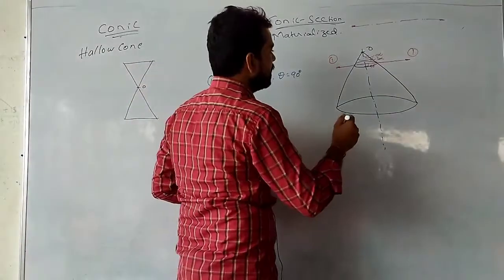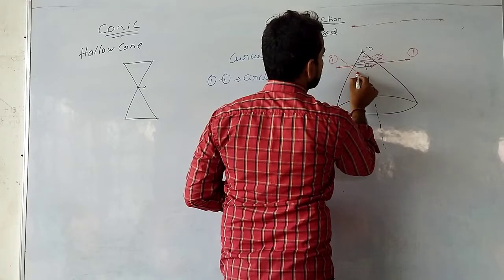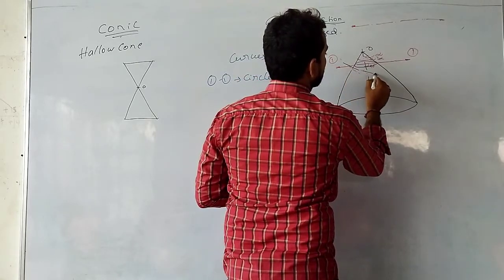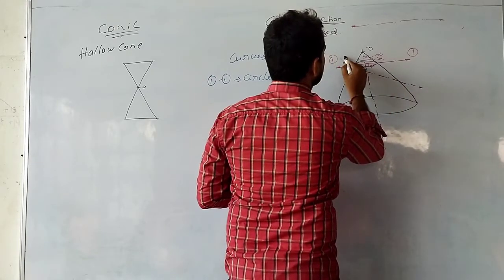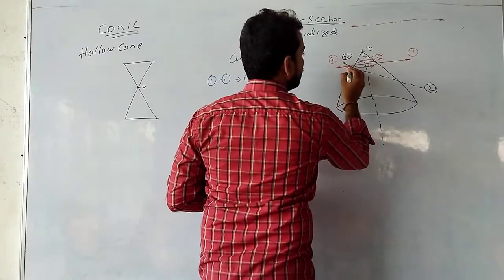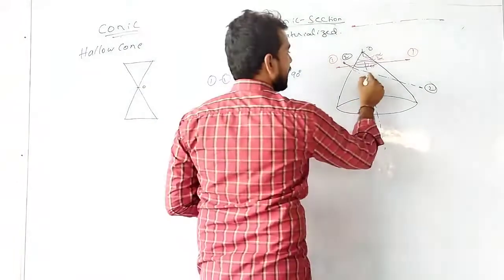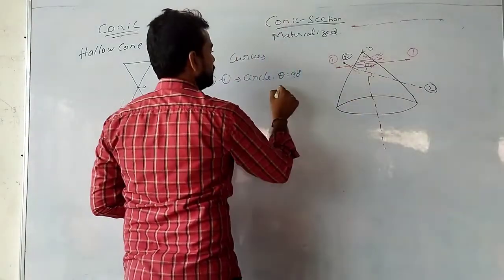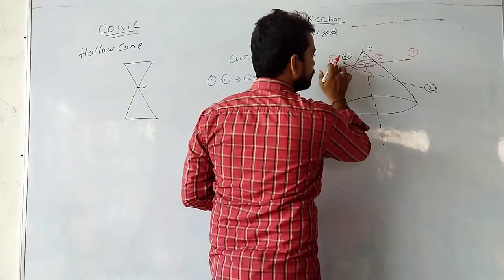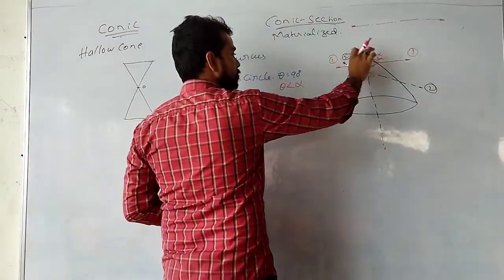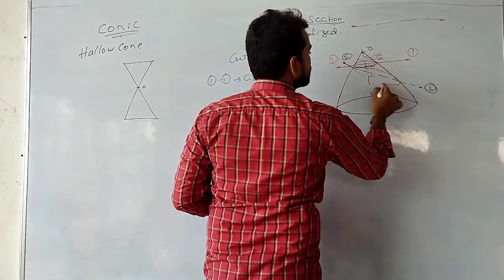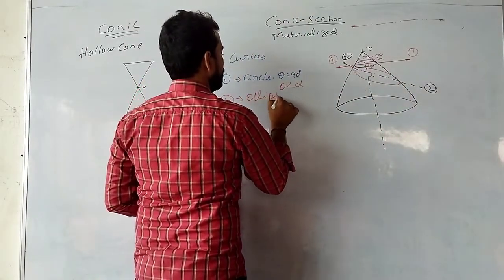Next, I divide the cone with section 2-2. Here the sectioning plane cuts two generators, and the angle theta is less than alpha. If the sectioning plane cuts both generators with an angle less than 90 degrees, you get an ellipse.